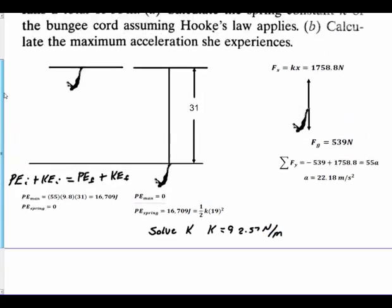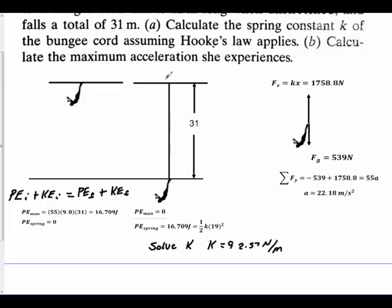To calculate the maximum acceleration she's going to experience, we're going to do a free body diagram of her here. Her mass times gravity coming down, that would be her 55 times 9.8, which gives me the minus 539 coming down here.